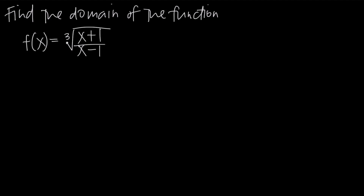To say where this function in particular is continuous, we're going to have to address two things. First of all, we've got a fraction inside of our square root, and we know that a fraction is undefined wherever the denominator is equal to 0 because we can't divide by 0. So if we take the denominator x minus 1 and set that equal to 0 and solve for x, we'll add 1 to both sides and get x equals positive 1. This tells us that the function f of x is undefined whenever x equals 1, because if x is 1, then in the denominator we get 1 minus 1, which is 0, and we can't have 0 in the denominator.